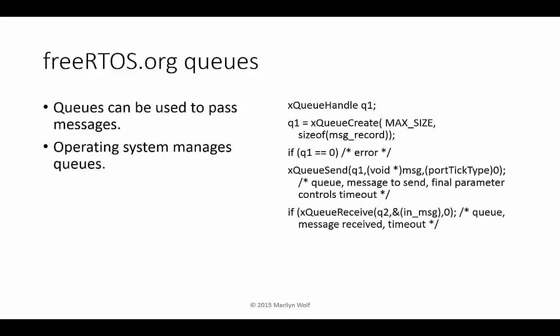A useful form of non-blocking communication is the queue. Queues can be used to pass messages that will be received and operated on later. Here's an example of code from the FreeRTOS.org operating system that implements a queue — the operating system itself manages the queue's behavior.